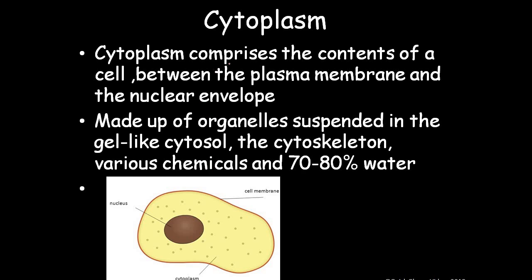Cytoplasm comprises the content of the cell between the plasma membrane and the nuclear envelope. It is made up of organelles suspended in the gel-like cytosol, the cytoskeleton, and various chemicals, with 70 to 80 percent water. These are the constituents of cytoplasm.